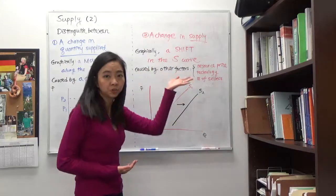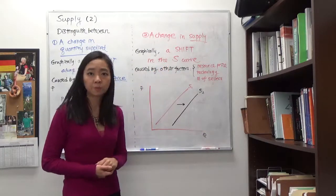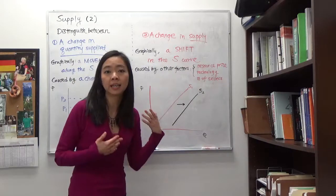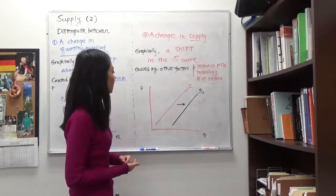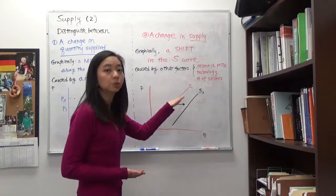So when there is a change in supply, we're going to observe a shift in the supply curve. So in this case, for example, if there is an increase in supply, we're going to see the supply curve shifting from S1 to S2.